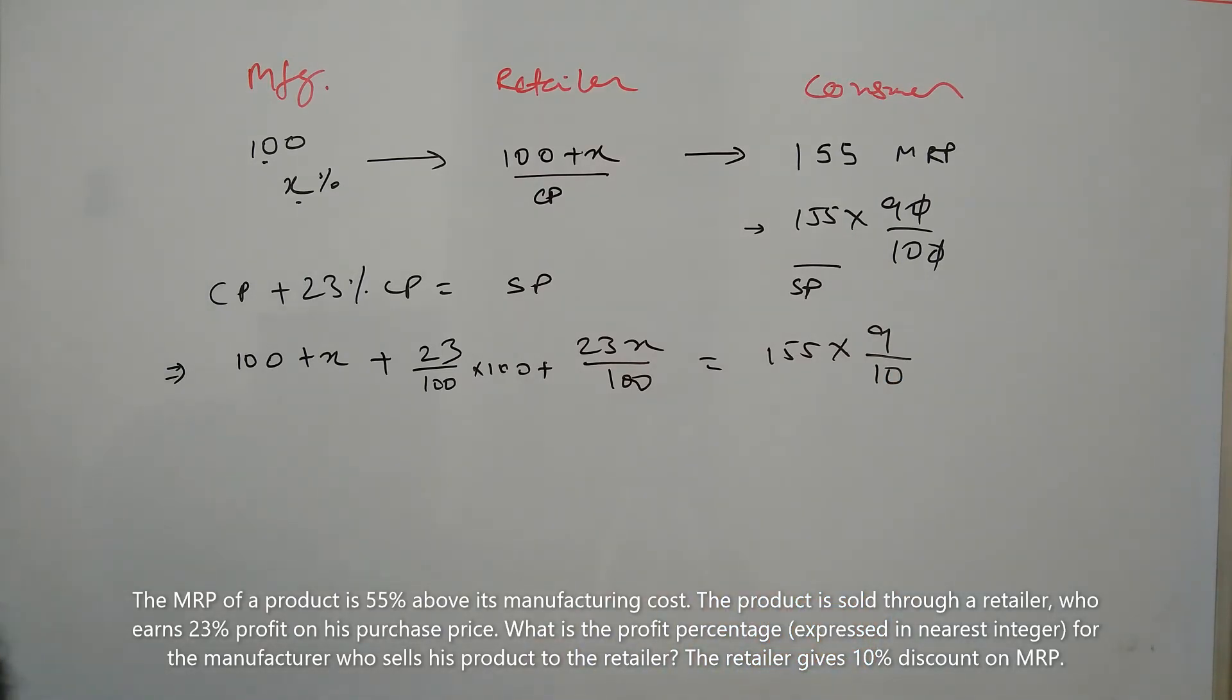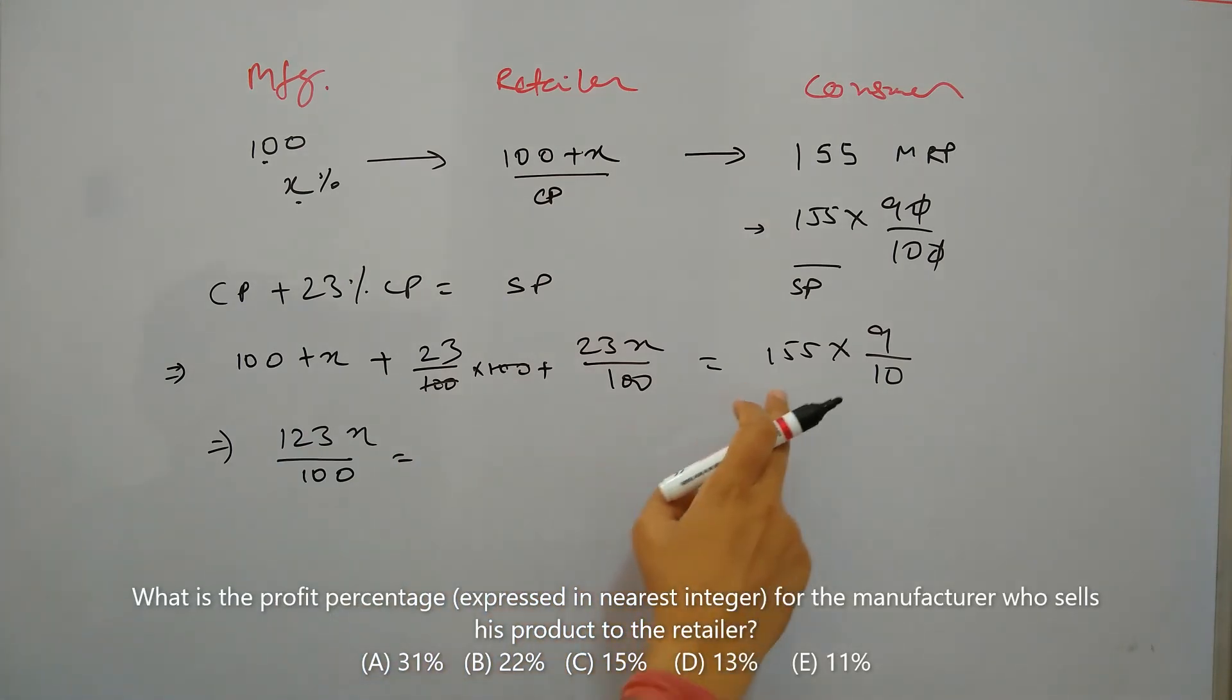If we solve this, then it's 123X. This becomes 155 times 9, which is 1395 divided by 10, minus 1230 divided by 10, which equals 165 divided by 10.